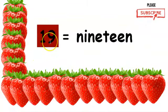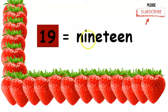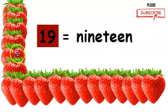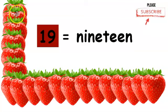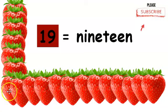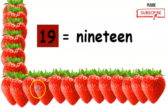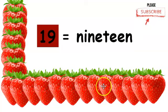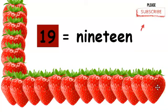This is the number nineteen. This is how you write the word nineteen. We should have nineteen strawberries. Let's count from one to nineteen. One, two, three, four, five, six, seven, eight, nine, ten, eleven, twelve, thirteen, fourteen, fifteen, sixteen, seventeen, eighteen, nineteen strawberries. Nineteen.